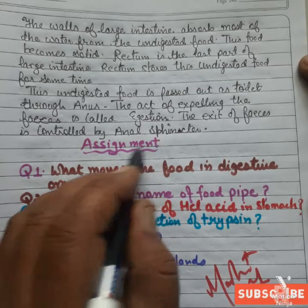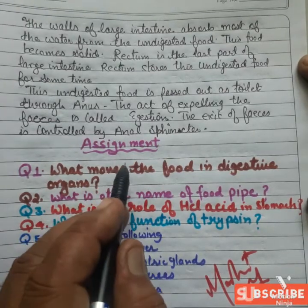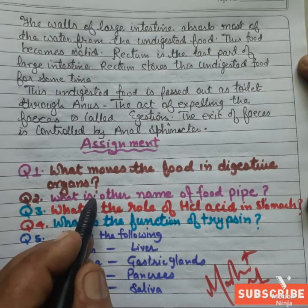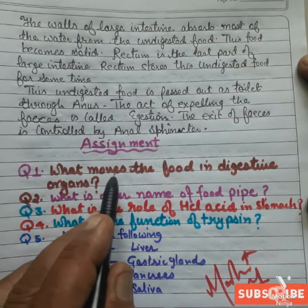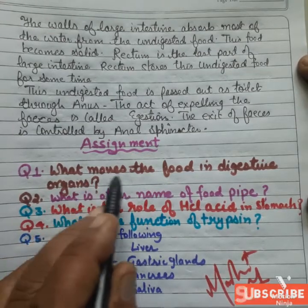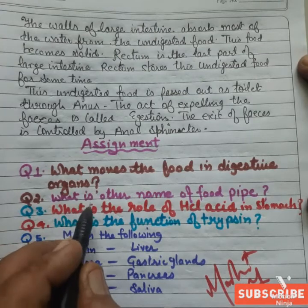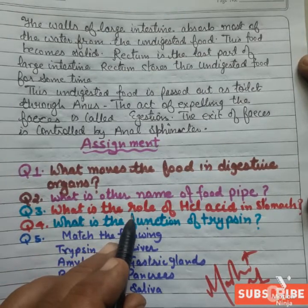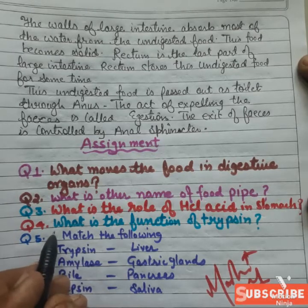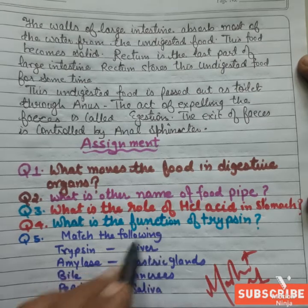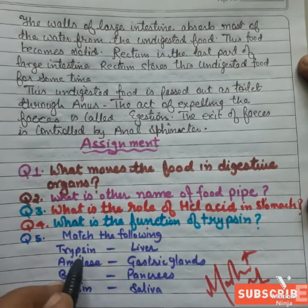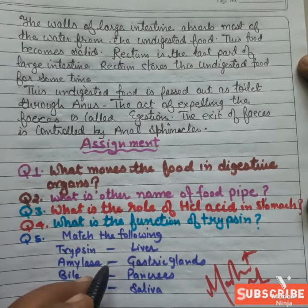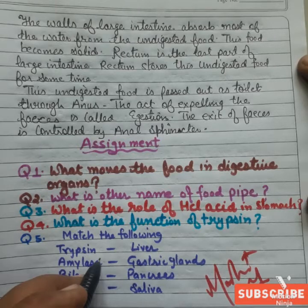Now I have some assignment questions for you, students. First: what moves the food in digestive organs? Second: what is the other name of the food pipe? Third: what is the role of hydrochloric acid in the stomach? Fourth: what is the function of trypsin? Fifth: match the following — trypsin, amylase, bile juice, and pepsin. Please work out all these questions and send me the answers through the chat box.